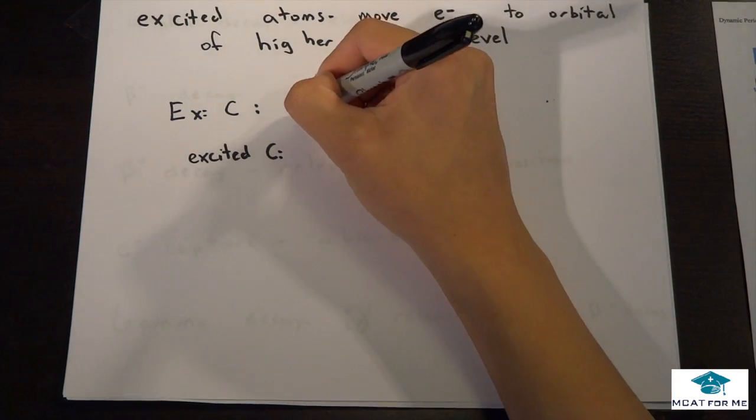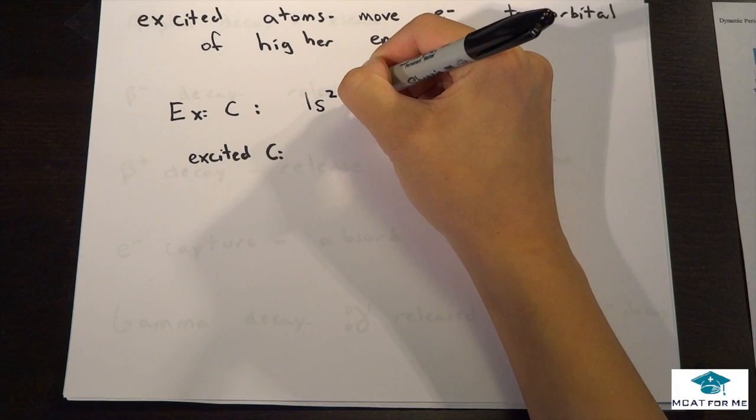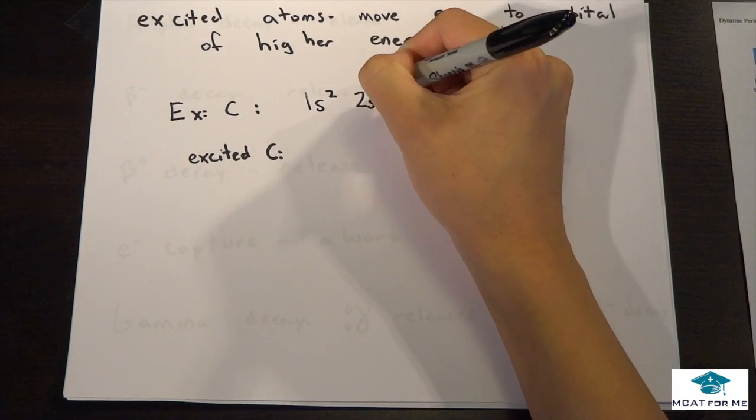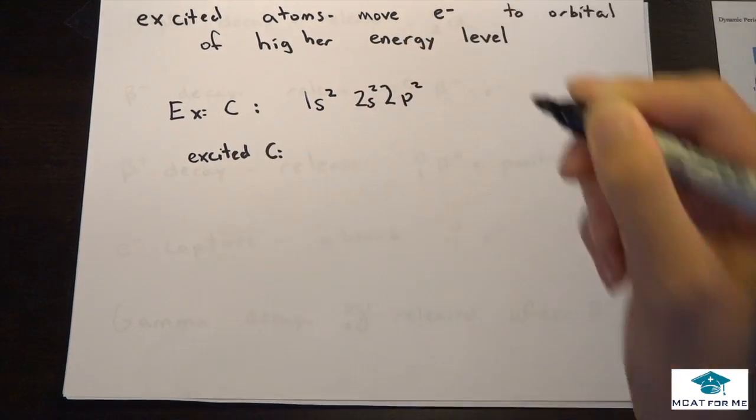So for example, let's take carbon, which is 1s2, 2s2, 2p2, right?